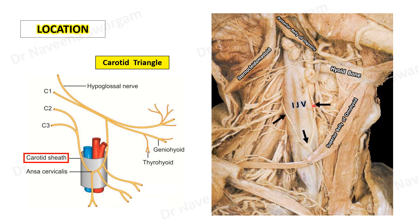The point to be understood here is that the superior root lies in a more superficial plane than the inferior root, which surrounds the lateral margin of the internal jugular vein.